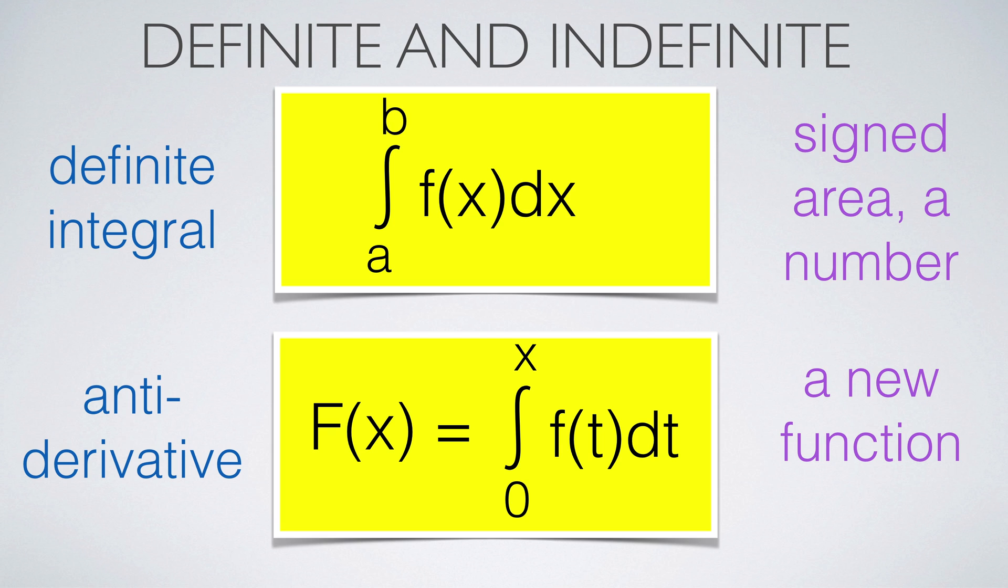The just defined limit of Riemann sums defines a definite integral. It is a number. If the upper limit of the interval is a variable x, then we obtain a new function called the antiderivative of f. We see it here in the case when the interval goes from 0 to x. If x is negative, then the result changes.